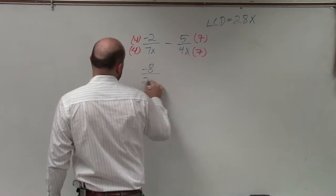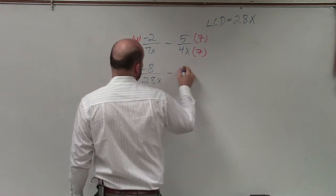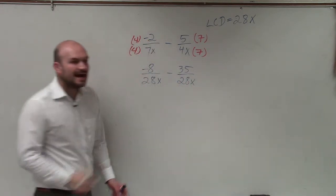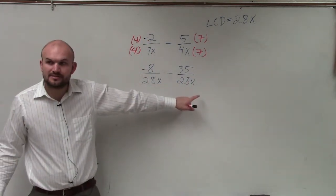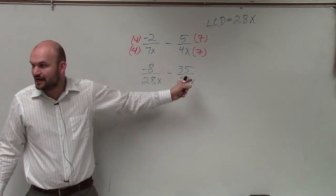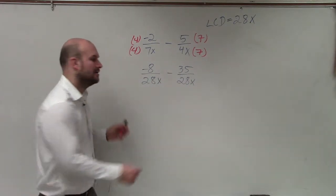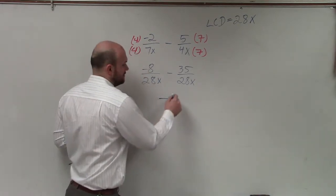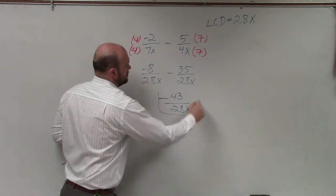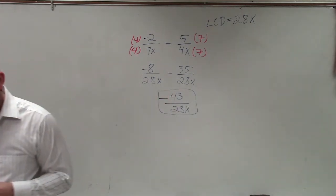So if I obtain negative 8 over 28x minus 35 over 28x, now I have common denominators. If I owe you $8 and I borrow $35, I now owe you $43. Okay?